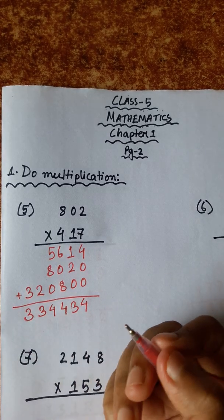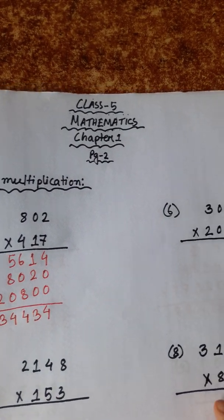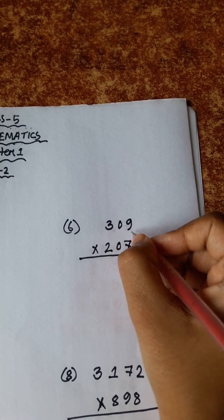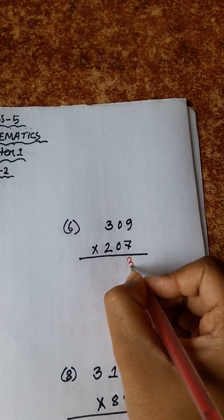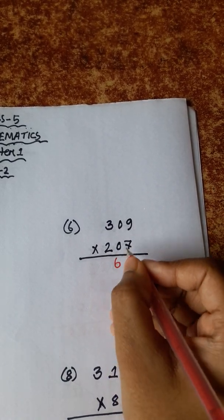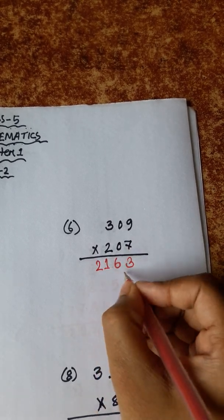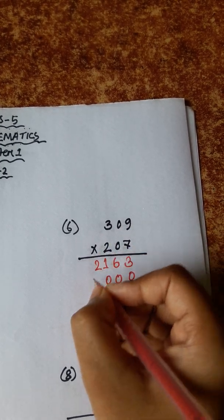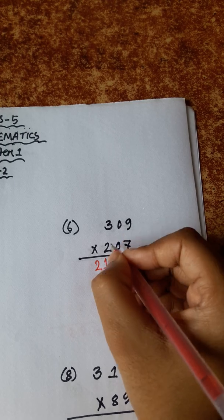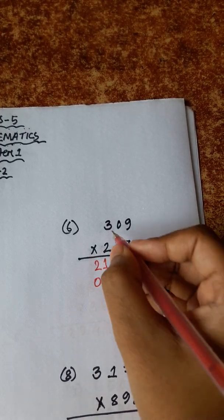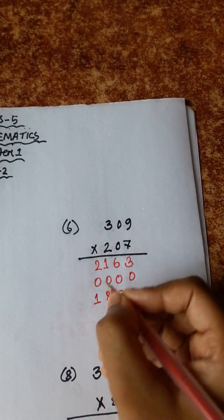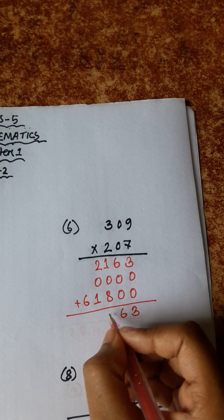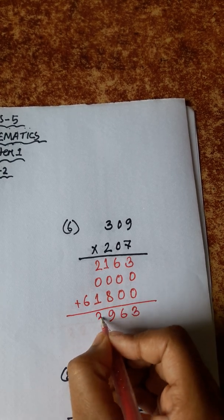Number 6: 3309 multiplied by 207. 9 sevens are 63, carry 6. 7 zeros are zero, plus 6 is 6. 7 threes are 21. Zero nines are zero. Zero zeros are zero. Three zeros are zero. 9 twos are 18, carry 1. Two zeros are zero, plus 1 is 1. 3 twos are 6. 8 plus 1 is 9. 2 plus 1 is 3.